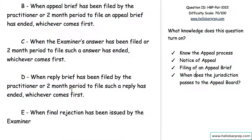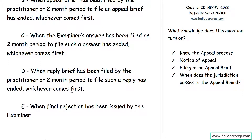Let's look at D: when the reply brief has been filed by the practitioner, or the two-month period to file such a reply has ended. That sounds like the right answer — either when the reply brief is filed by the practitioner (not the reply by the examiner), or if the practitioner decides everything is fine and doesn't need to file a reply to the examiner's reply to your appeal brief, then jurisdiction passes. At the end of two months, if you do reply, it passes on the day received by the USPTO.